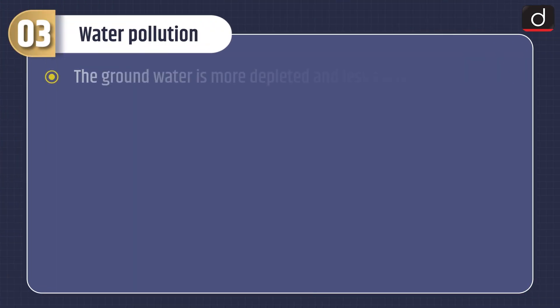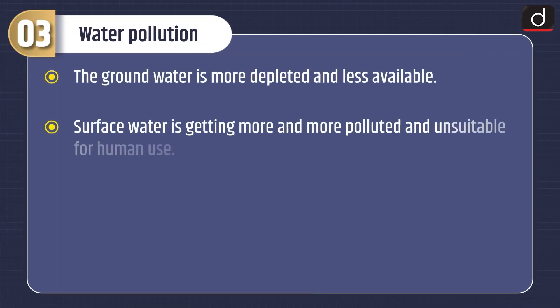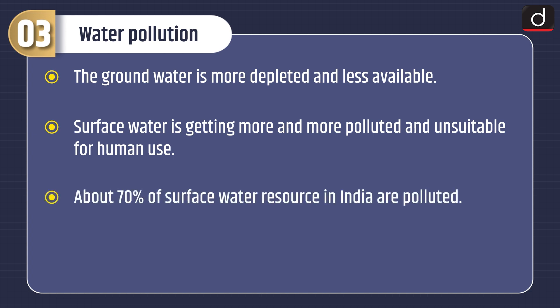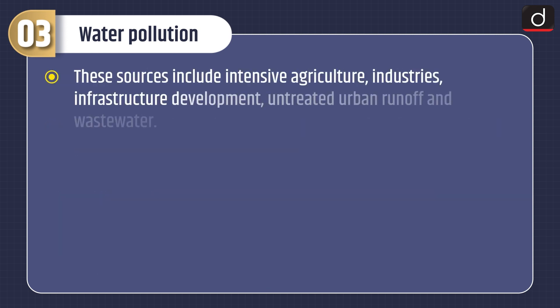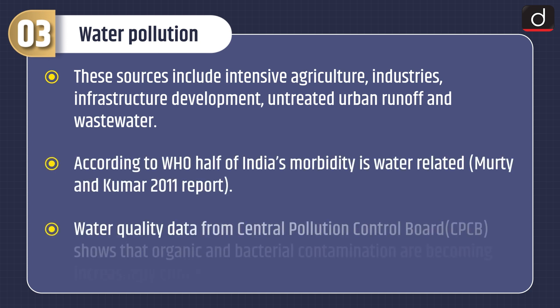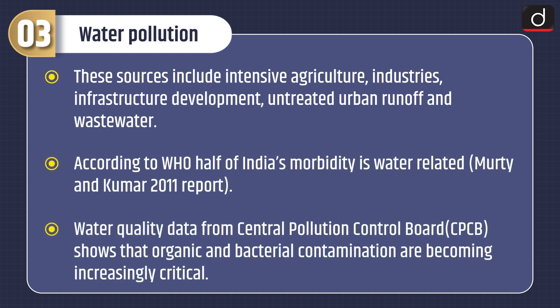Now let's discuss about water pollution. The groundwater is more depleted and less available. Surface water is getting more and more polluted and unsuitable for human use. About 70 percent of surface water resources in India are polluted. The major contributing factors for water pollution are wastewater from different sources, including intensive agriculture, industries, infrastructure development, untreated urban runoff and wastewater.